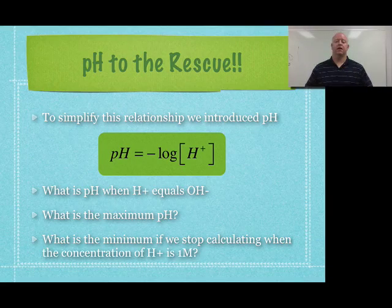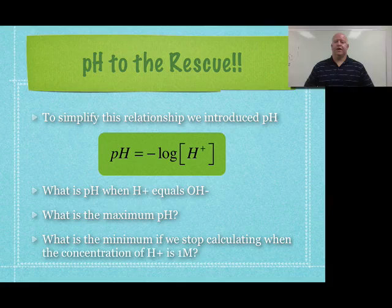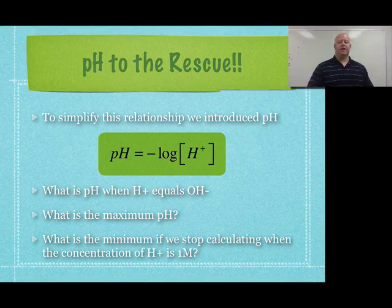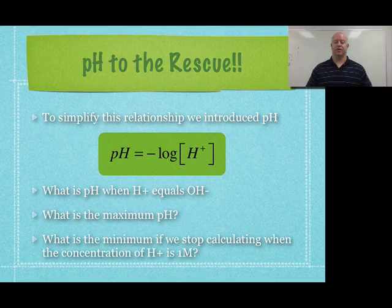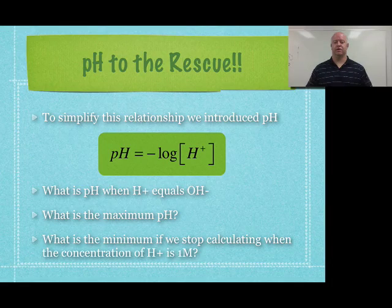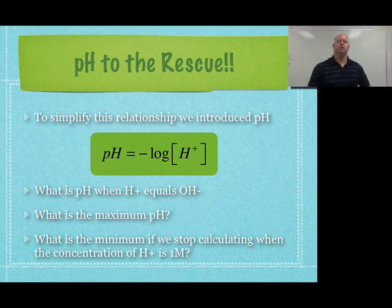So if we take a look at the equation for pH, we see that pH is equal to the negative log of the H plus ion concentration. Again, we see the brackets around there so we know it's H plus ion concentration.